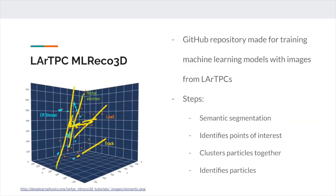The algorithm set that I used for this project was from a GitHub repository called LAR-TPC-ML-RICO-3D, made specifically for reconstructing images from liquid argon time projection chambers. The first step of this algorithm set is semantic segmentation, which classifies each particle as a track, shower, delta electron, delta ray, or low energy particle. The next step is the identification of points of interest, such as the starts and ends of tracks or showers. The third step is clustering, which groups particles together that have the same segmentation label and are within a set distance from each other.